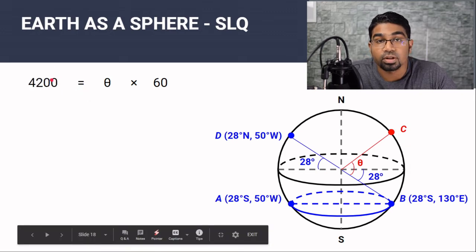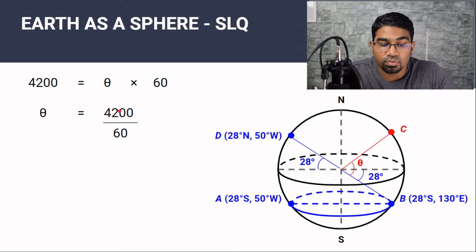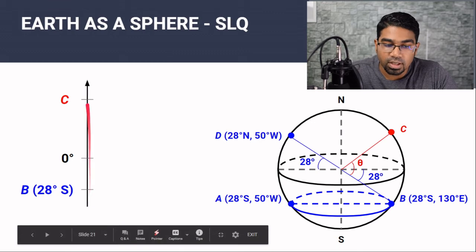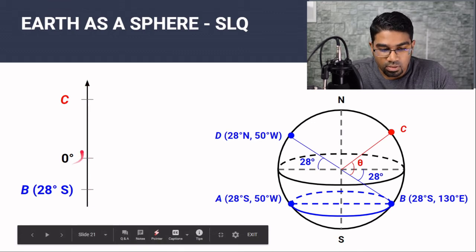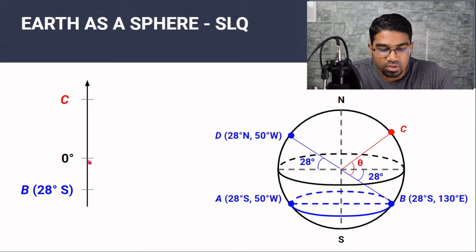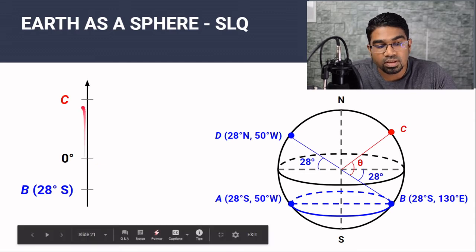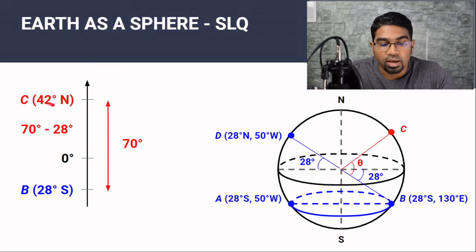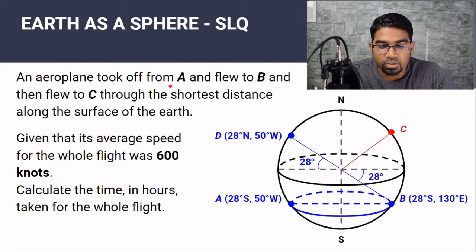The distance between C and B is 4200 nautical miles. Rearranging: θ = 4200 ÷ 60 = 70 degrees. This is only the difference in latitude, not the latitude of C itself. To find the latitude of C, use a vertical number line with zero at the equator. B is 28 degrees south, so mark −28. The difference is 70 degrees, meaning C is 70 − 28 = 42 degrees above the equator. So the latitude of C is 42 degrees north.